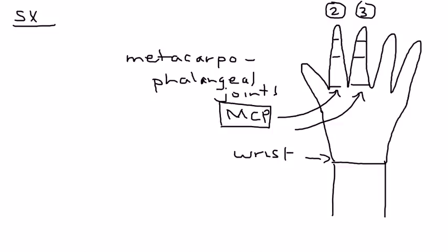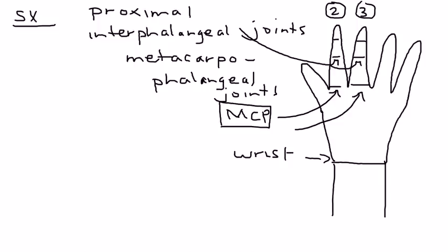Also affected are these ones. And these also have a specific name. They're known as the proximal interphalangeal joints. So remember those joints as being the main parts of the body that are affected. There's other parts as well, but these are the main ones.